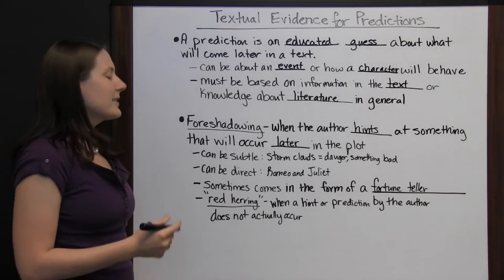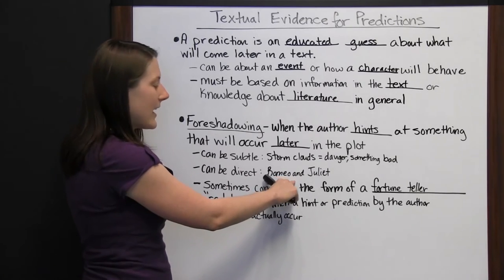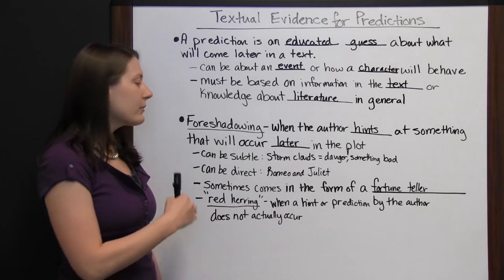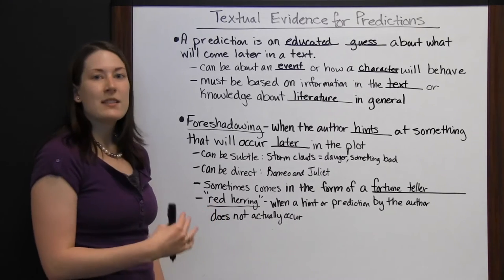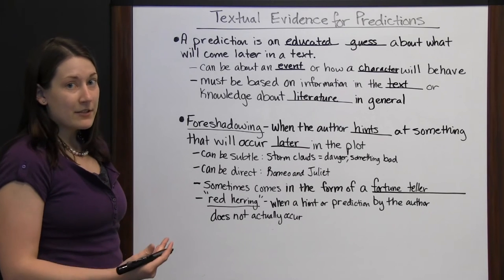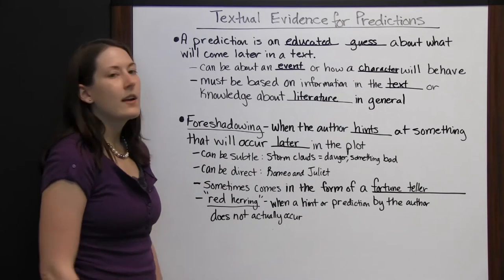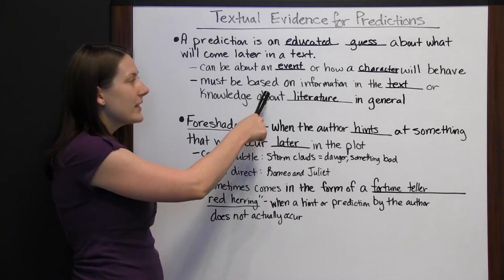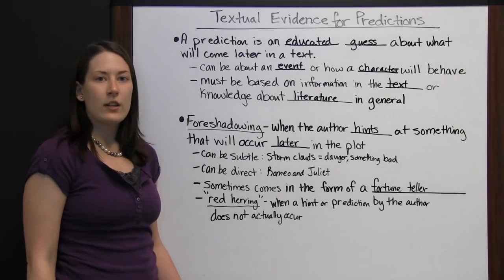You have to pay attention, because sometimes the author may give you a direct foreshadowing example that will be true. But sometimes they'll give a really big hint or even lay out the prediction with a fortune teller, but it's a red herring because that's not really how the author ends the story. So don't always think that if the author tells you something's going to happen, it's going to happen. Foreshadowing can often be a good textual support for any predictions you're going to make — just make sure your predictions are based on evidence, either from the story itself or from your general knowledge of literature.